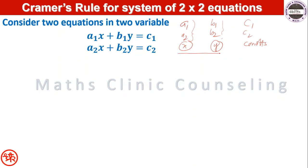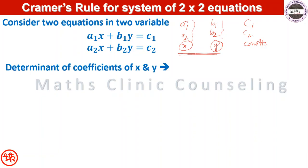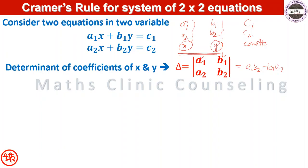First we write the determinant of coefficients of x and y, and let it be denoted by delta. So delta is equal to the determinant with first column [a1, a2] (coefficients of x) and second column [b1, b2] (coefficients of y). This can be evaluated as a1·b2 minus b1·a2.